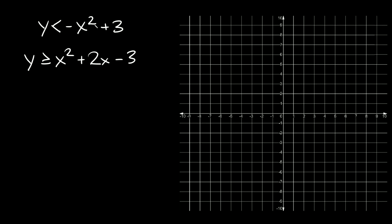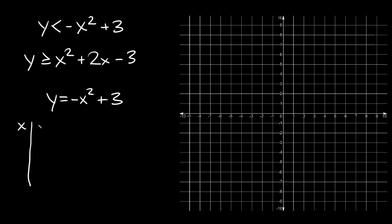So y is less than negative x squared plus three. The first thing you want to do is just change your inequality symbol to an equal sign. So here we really have y is equal to negative x squared plus three — that's what we're going to graph first. This is simple enough that we can just make a little xy table and plot some points.